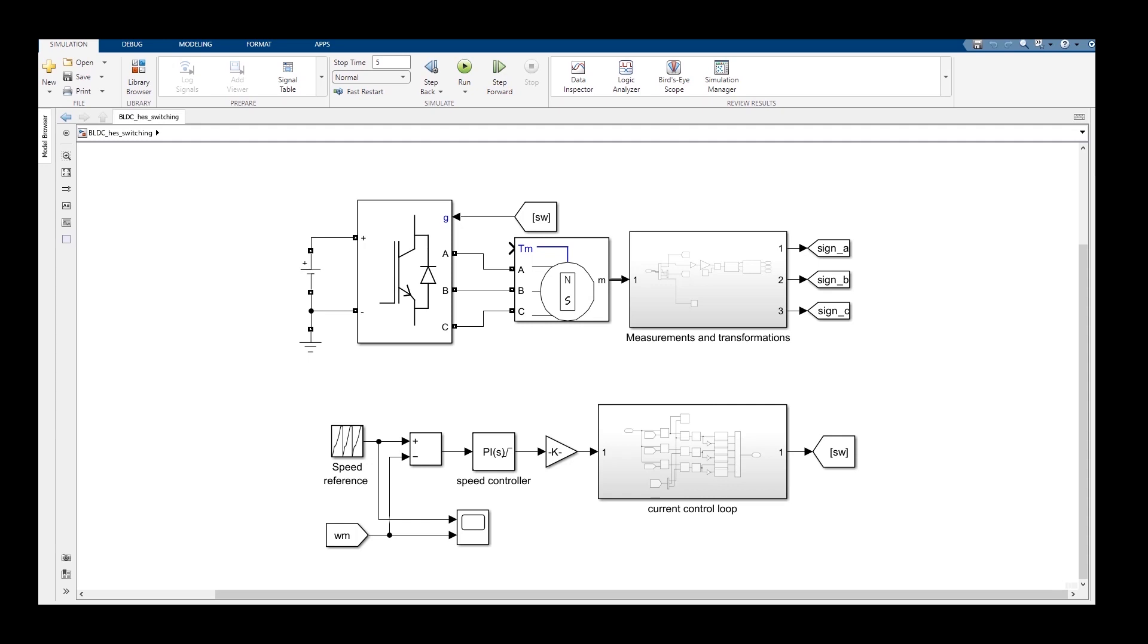So this is the Simulink implementation. And here we can see the speed reference and the feedback speed from the BLDC motor. And this feeds into the PI controller. You can notice this sign here. This is the saturation and the anti-windup algorithm I implemented there in order to ensure stable performance. And these topics will be covered in future videos. This is the inverse of torque constant.